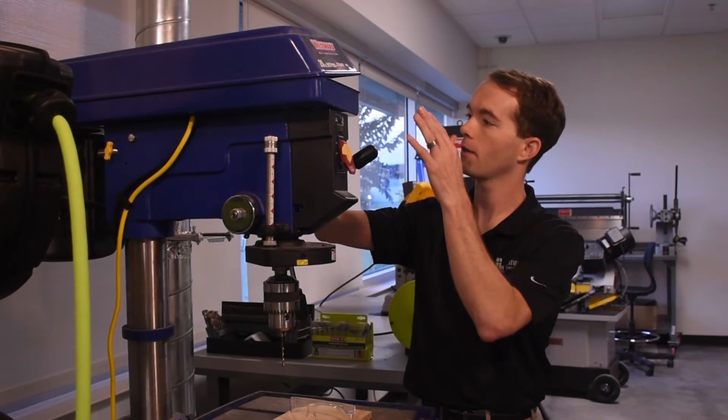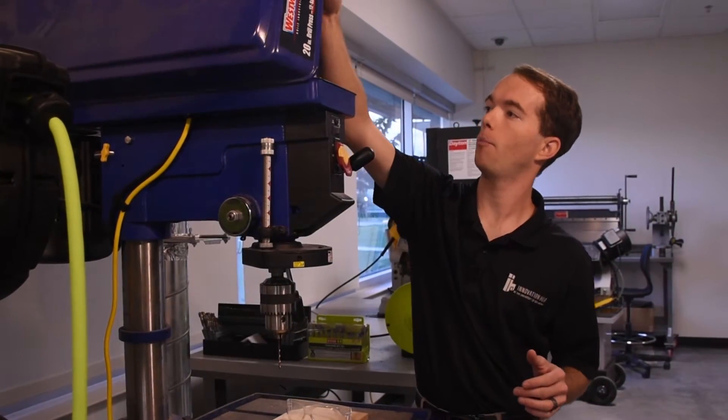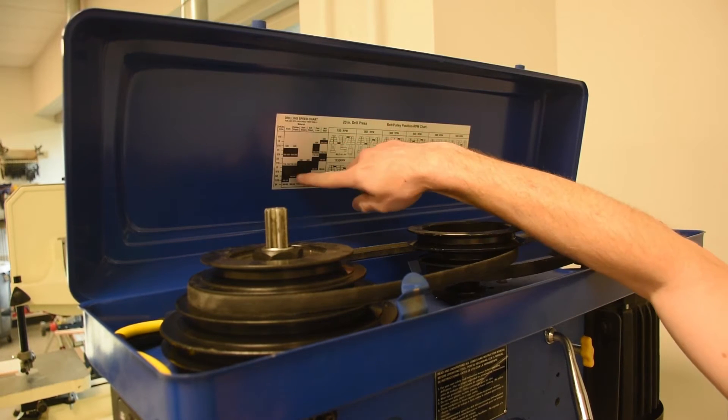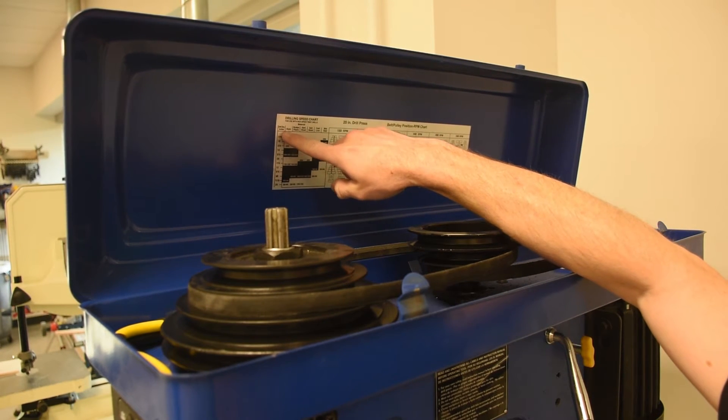So up here in the top, on the left side, just flip the top open. In the lid up here, there is a nice table that shows you what speed you should be going for whatever it is you're going through.